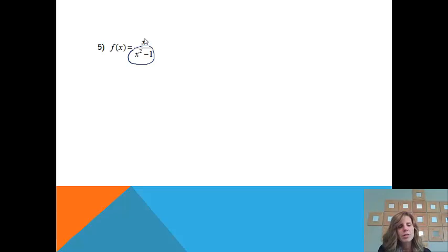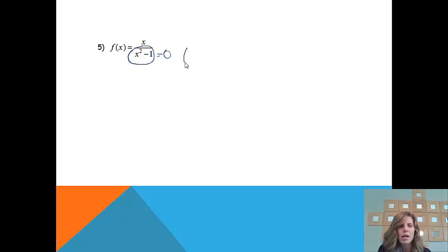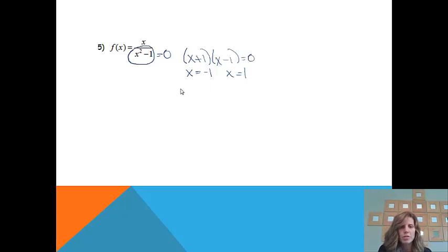Next example: f(x) = x over x² minus 1. We're concerned about the denominator. We need to figure out what would make the problem undefined, which is where the denominator equals zero. Since this is a difference of squares, I'll factor it as (x + 1)(x − 1). Using the zero product property, the function is discontinuous when x = −1 and x = 1. Something is happening there — a hole, gap, asymptote, or something — we just need to figure out what.